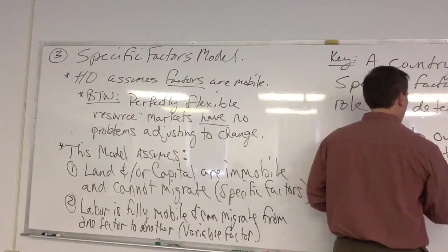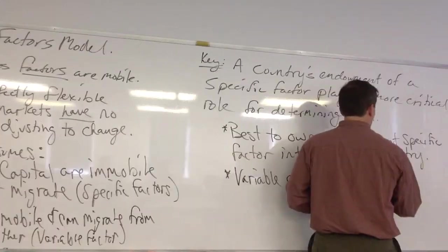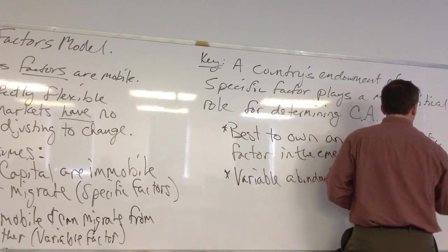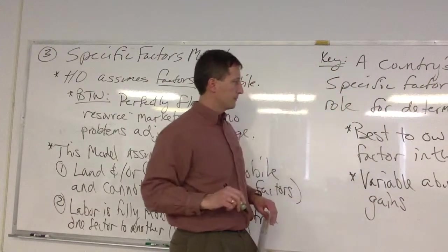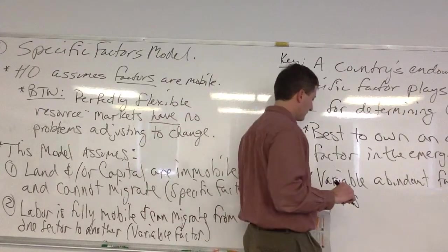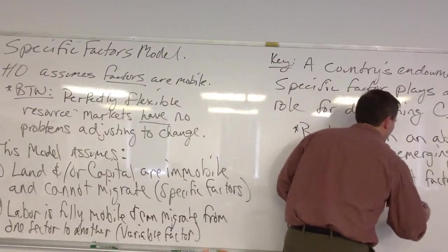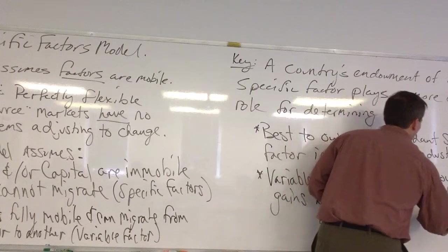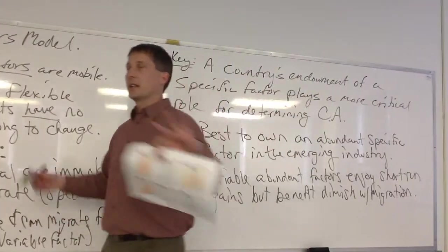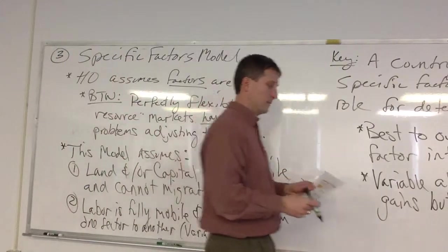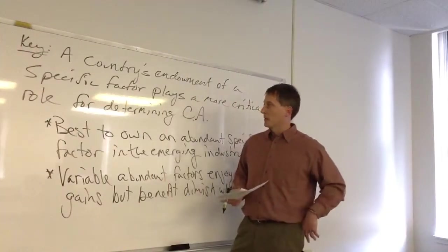although what the HO model told us is that you can have a specific factor potentially in another industry and still gain some, gain from that as well, because of opportunity cost. So you can contrast that with variable factors, variable abundant factors, enjoy short run gains. But benefits diminish with migration from the declining industry to the emerging industry. This is domestic, right? Yeah, yeah, we're just kind of thinking domestically within our country.